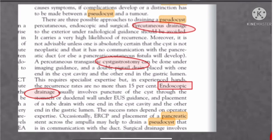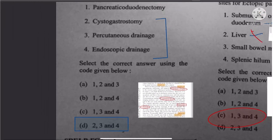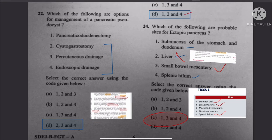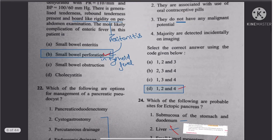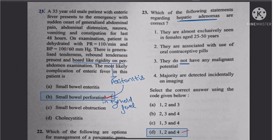Question 22: Options for management of pancreatic pseudocyst include percutaneous drainage, cystogastrostomy, and endoscopic drainage. One of the listed options is not appropriate. The answer is 2, 3, and 4.